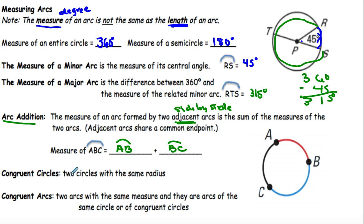Congruent circles are two circles with the same radius. Congruent arcs are two arcs with the same measure, and they are arcs of the same circle or congruent circles.